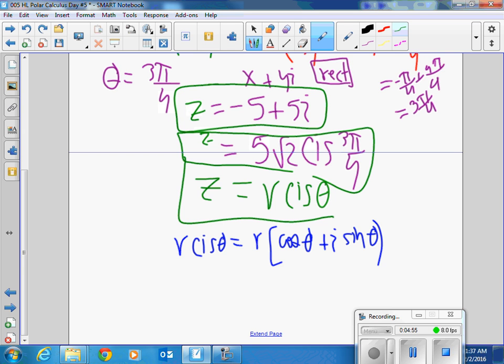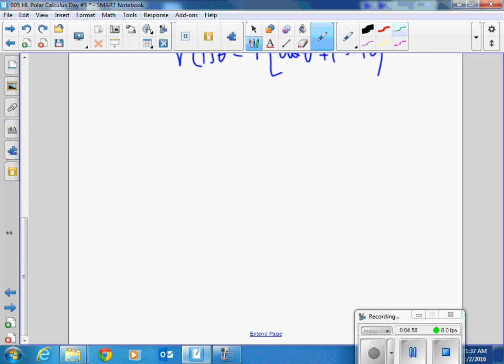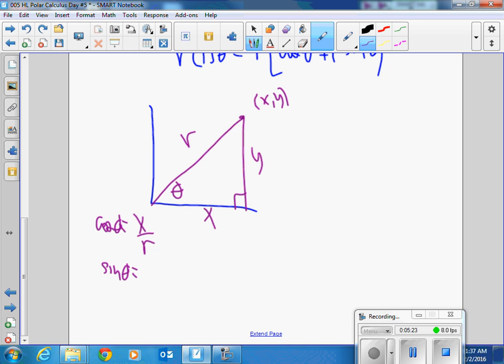We found out yesterday that if you drew a triangle, you took a point up here, x, y, right? That triangle would be x, y, and we're going to call this r and this theta, right? The cosine of theta is x over r. The sine of theta is y over r. So far, so good? So then what you'll do is r times cosine is your x. x, r times the sine, just cross-multiplying, is your y. Okay?